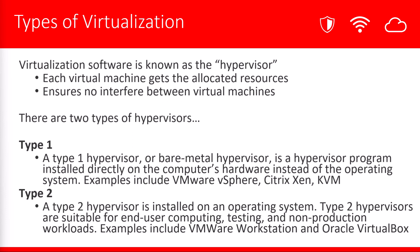A type 2 hypervisor works in a similar fashion but is installed differently. Typically you'll have a PC with an operating system like Windows, Linux, or even Mac, and the type 2 hypervisor runs on top of that. Type 2 hypervisors are great for end users who want to do testing and non-production workloads. Examples include VMware Workstation and Oracle VirtualBox.